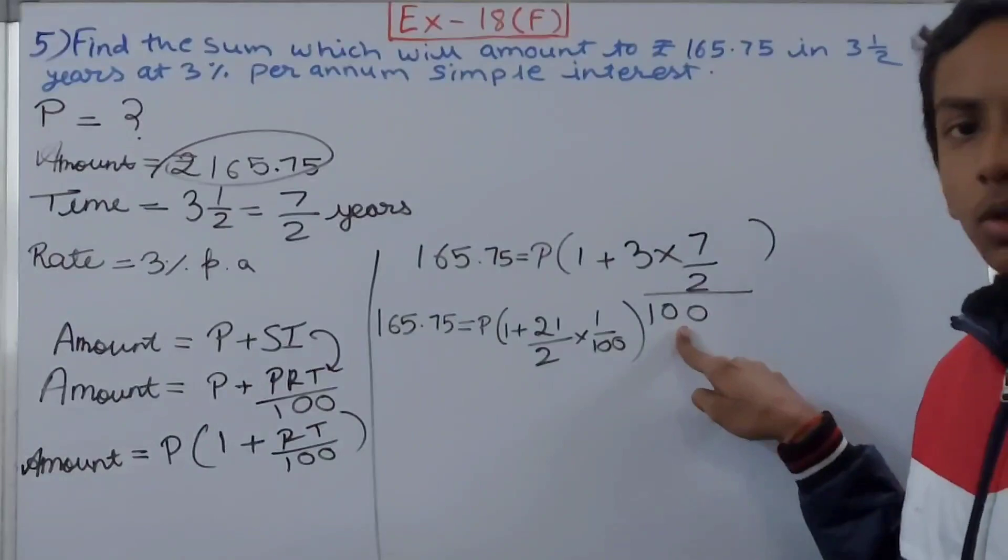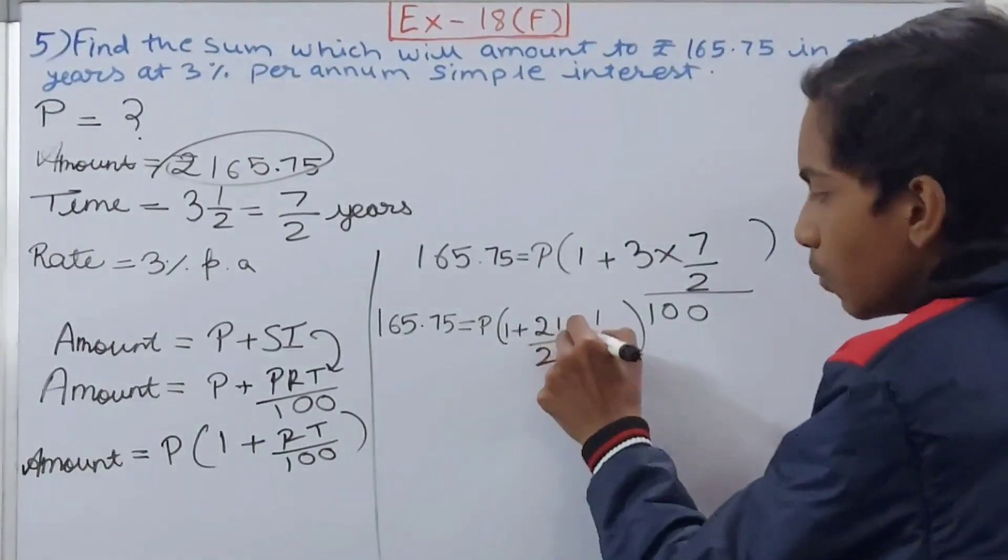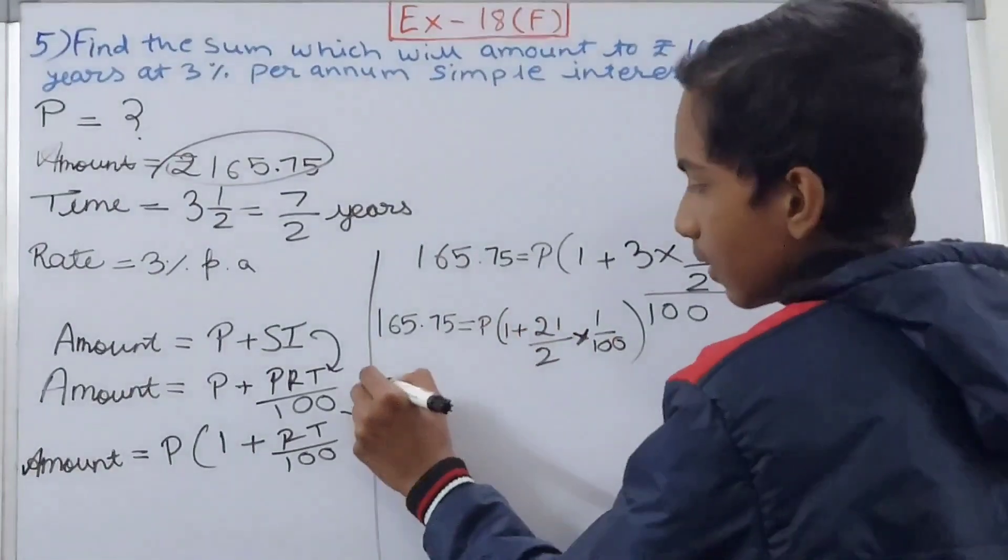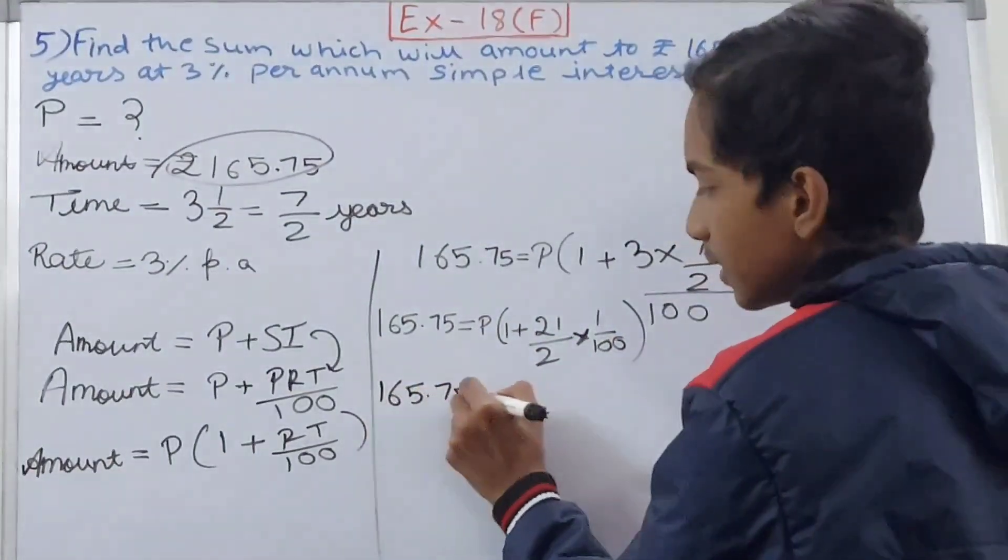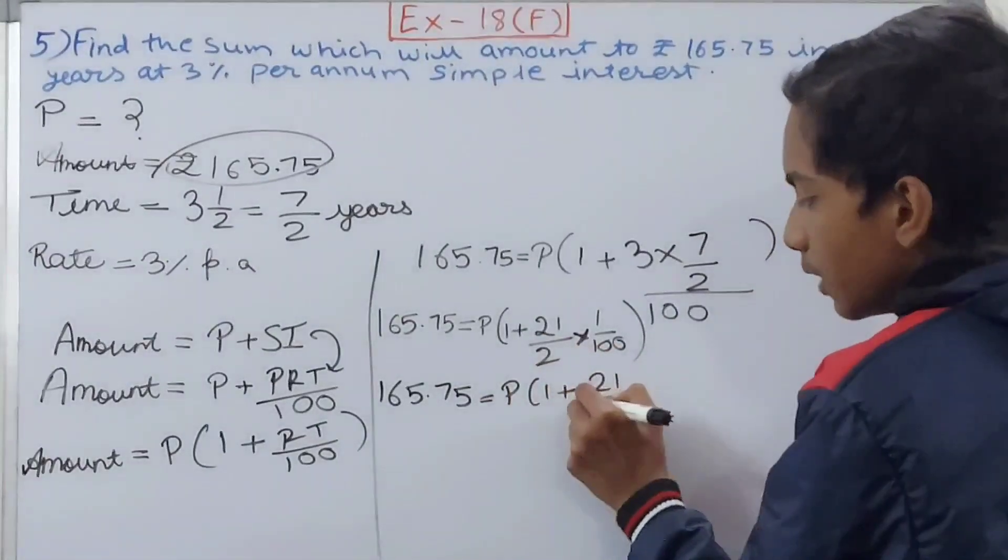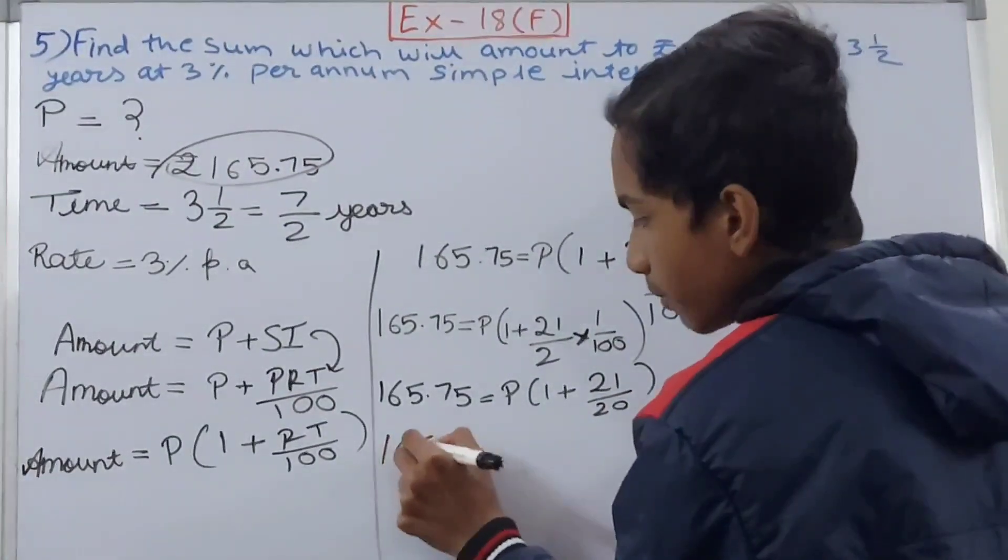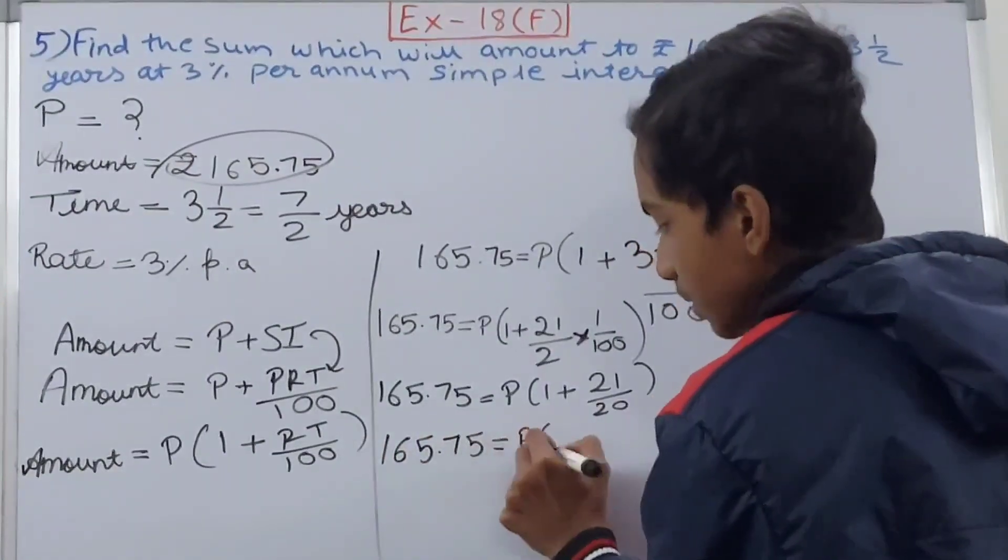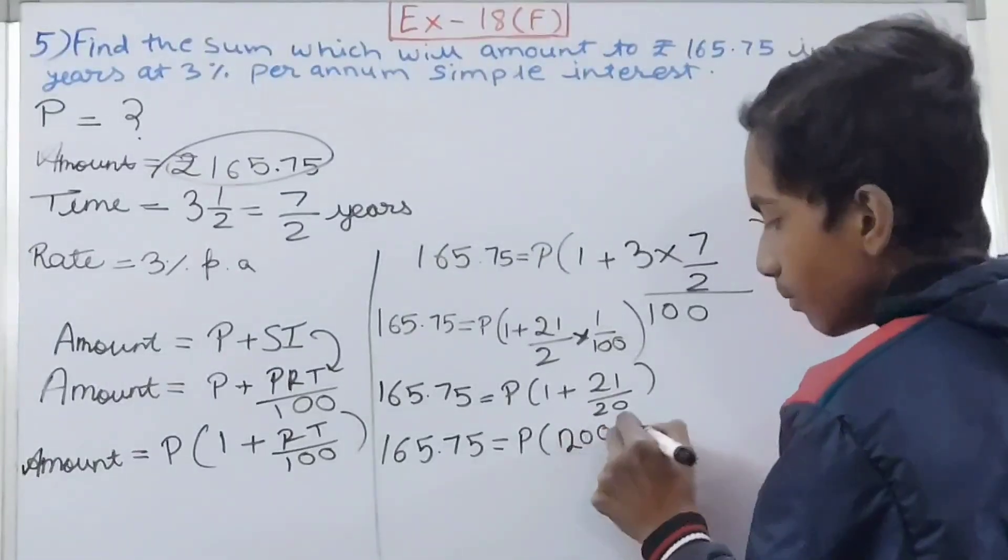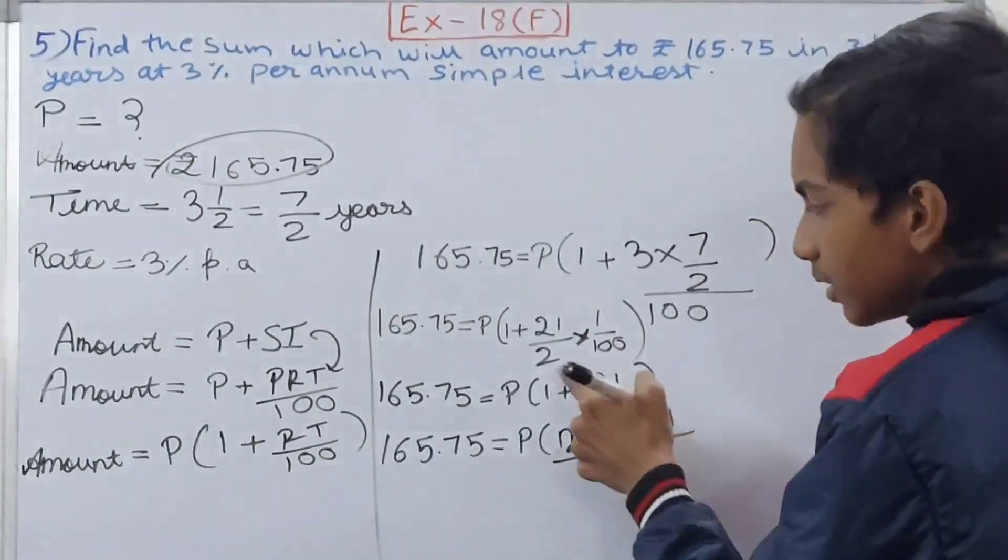Nothing can be cancelled here, so solve this: 165.75 equals P(1 + 21/200). On solving, 165.75 equals principle in brackets: 1 becomes 200 plus 21 upon 200. This is 200 - 2×100 is 200.